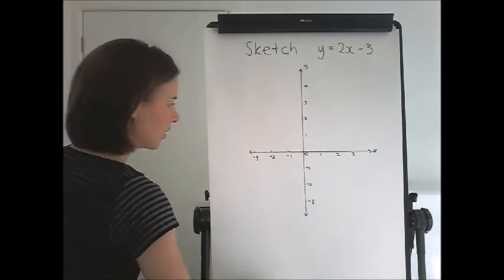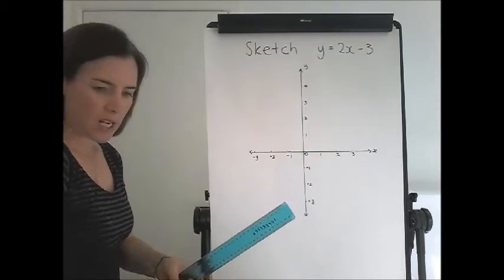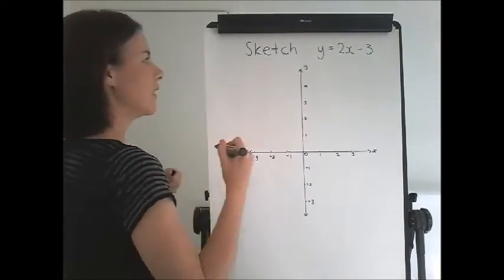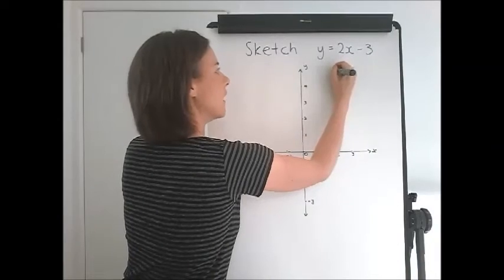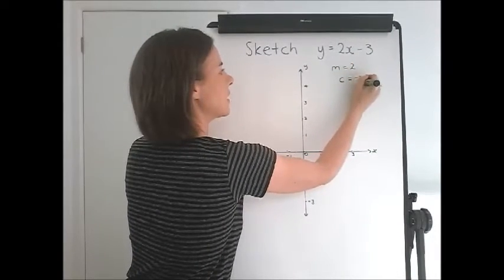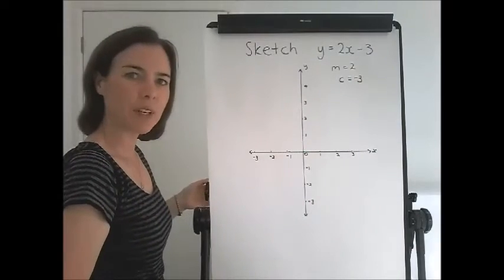Now when you come to draw your graph, we need to find the gradient and the y-intercept. Now for this graph here, the gradient is 2 and the y-intercept is negative 3, like we practiced in class.